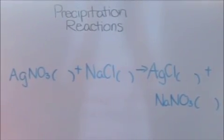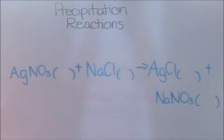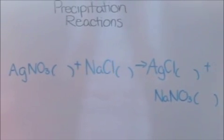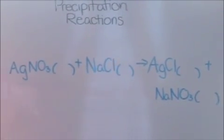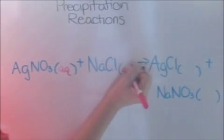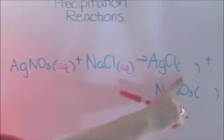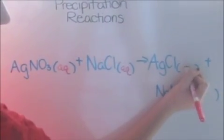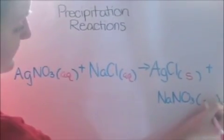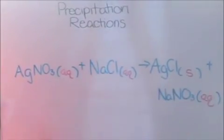And to conclude our lesson on precipitation reactions, we need to just overall understand that it includes two solutions as its reactants, so aqueous, aqueous, which goes to form a precipitate, which is the solid, and another product. And that concludes our lesson.